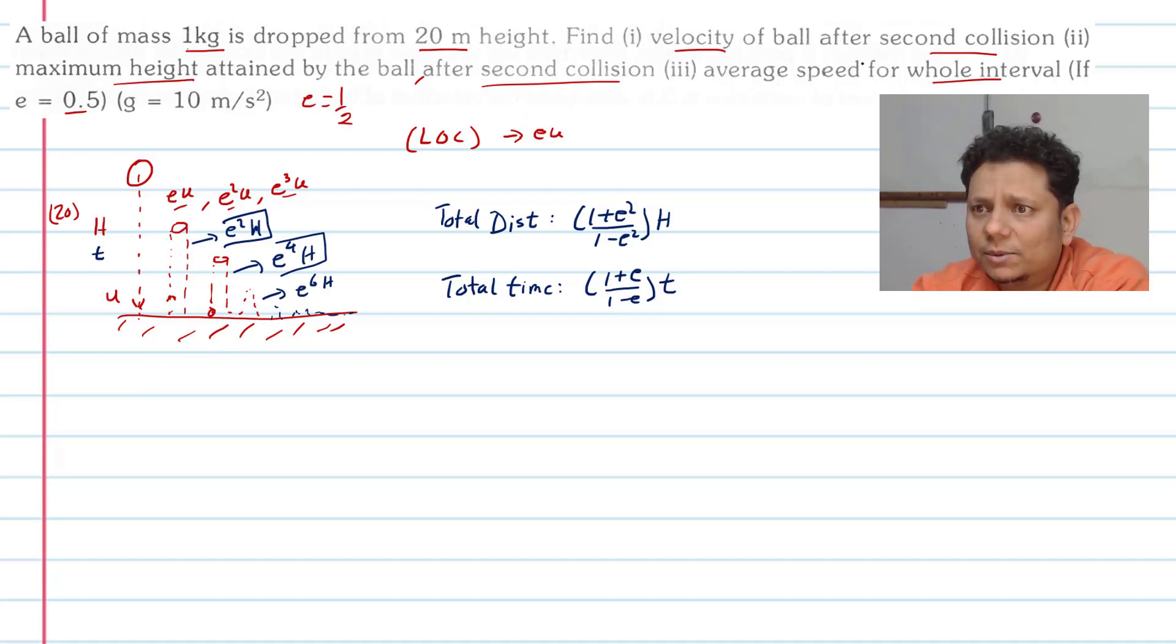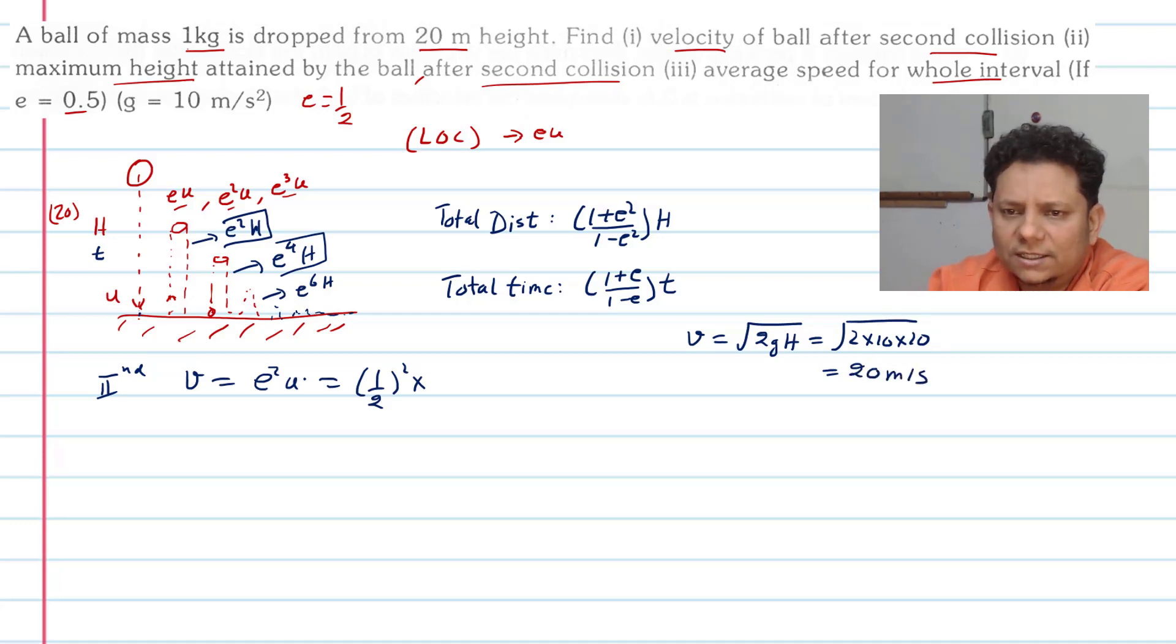Now let's talk about velocity of the ball after second collision. After second collision, the velocity will be e²·u. The value of e given here is 1/2. So this will be equal to (1/2)²·u. To find the original value, we will use kinematics formula. u² = 2gh, so u = √(2×10×20) = √400 = 20 m/s.